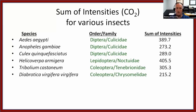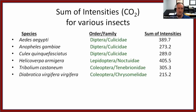Helicoverpa armigera, the cotton bollworm, is interesting because a decades-old paper mentioned it was the most sensitive to CO2 they had ever tested. I calculated its sum of intensities at 405.5, which aligns with that finding. Tribolium castaneum, the red flour beetle, is also known to be attuned to carbon dioxide receptors, and that comes in at a very respectable 305.3. All of these known CO2 receptors score relatively high, giving us associative evidence between them.